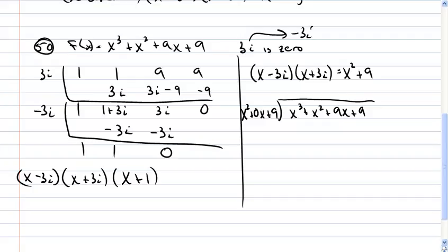So what can I multiply x squared by to get me to x cubed, and that would be an x. So I have x cubed plus 0x squared plus 9x, and I have an x squared plus 0x plus 9. What can I multiply x squared by to get x squared? 1. x squared plus 0x plus 9, and no remainder. So what's left is x plus 1. Again, it's linear, I don't have to do anything with it except list it. So we have x minus 3i, x plus 3i, and x plus 1, just like we got there on the left.